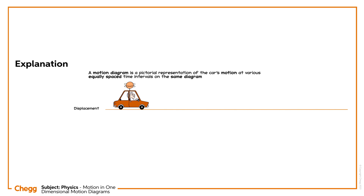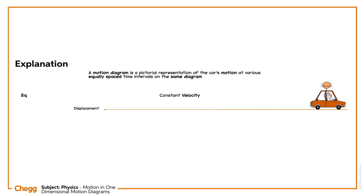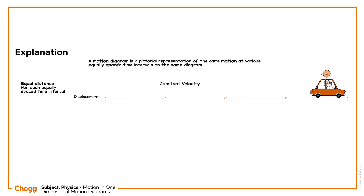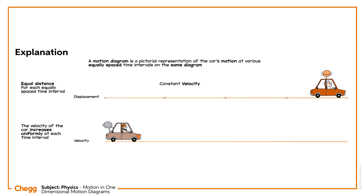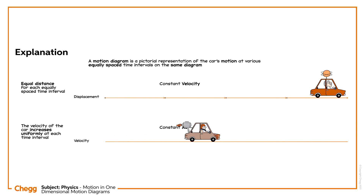When the car is moving with a constant velocity, it displaces an equal distance for each equally spaced time interval and its motion diagram looks like this. The velocity of the car increases uniformly at each time interval when the car is moving with a constant acceleration, and its motion diagram looks like this.